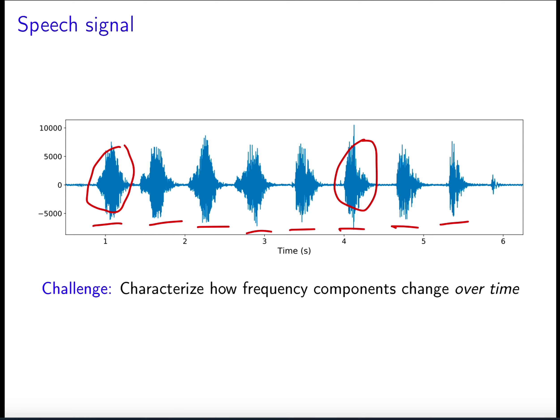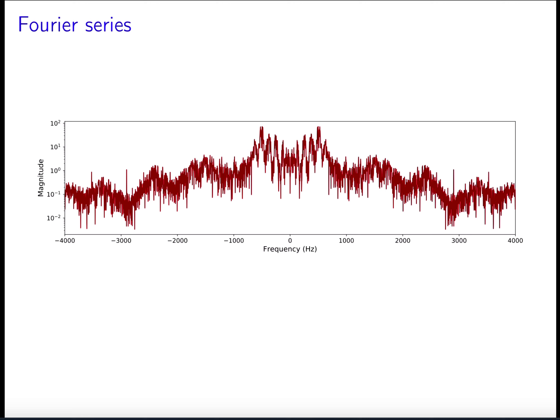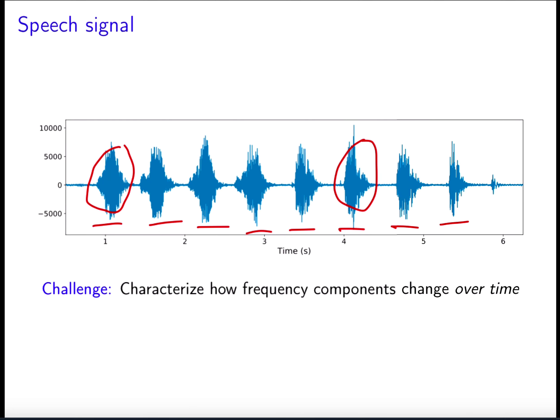If we just apply the Fourier series and compute the Fourier series coefficients from the signal, we get a plot where we can see which frequencies are higher — we can identify oscillating components at certain frequencies. So we know what frequencies are present in the signal, but we don't know when they are active. We don't know if they're active here or here or here.